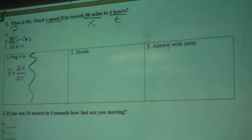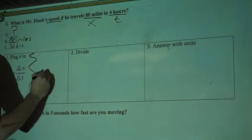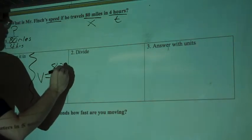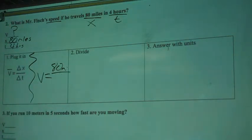Alright, step one on my solving is going to be plug it in. So I've got velocity equals change in distance over change in time. I don't know my velocity, so I'll leave V there. Equals change in distance is 80 miles, and I'll abbreviate miles with MI.